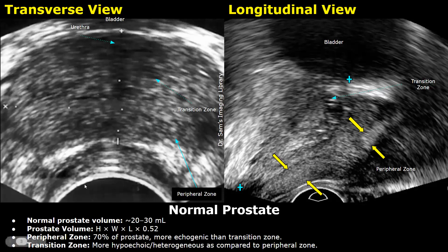The TRUS images are inverted — the ultrasound probe is at the bottom of the image and the rectal wall is just anterior to the probe. In the transverse plane, this larger echogenic structure is the peripheral zone of the prostate, and this smaller hypoechoic structure is the transition zone, which can also appear heterogeneous. In normal cases, the peripheral zone occupies the majority of the prostate.